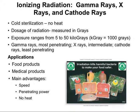Radiation penetrates liquids and most solids, with gamma rays being the most penetrating, x-rays having an intermediate level of penetration, and cathode rays being the least penetrating. The dosage of radiation is measured in grays, and exposure from these machines ranges from 5 to 50 kilograys. A kilogray is 1000 grays.